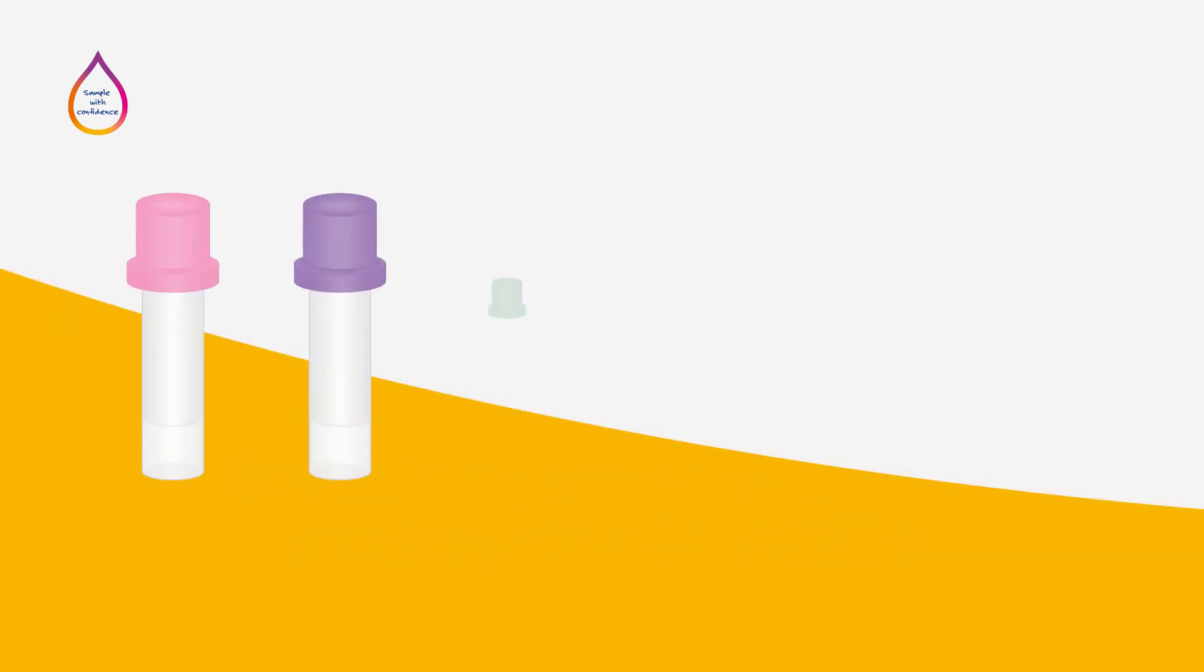Maintaining the correct order of draw can help to prevent inaccurate results. Each collection tube cap is colored to indicate the type of additive inside. This in turn corresponds to the type of test, or tests, for which it is intended. These colors are universally consistent.